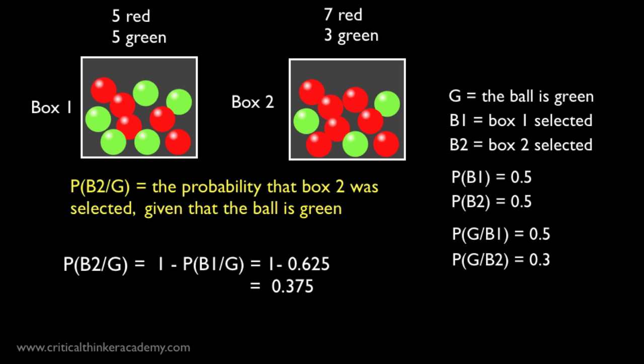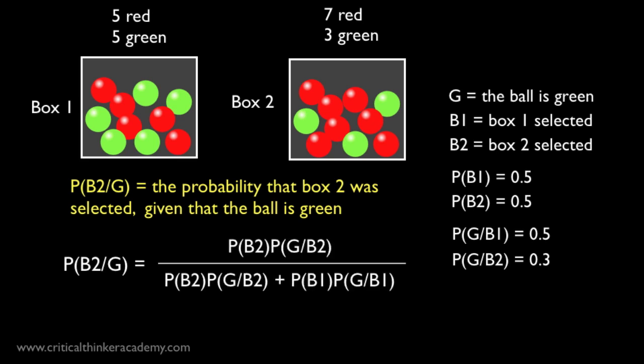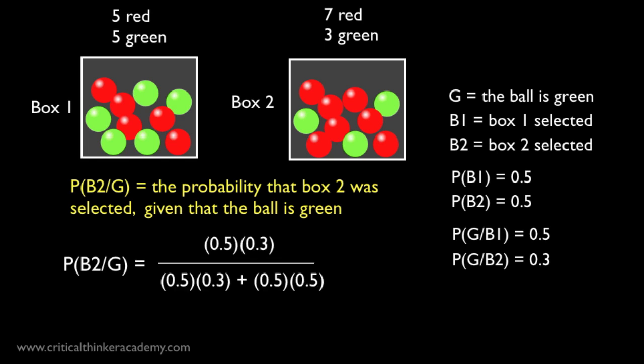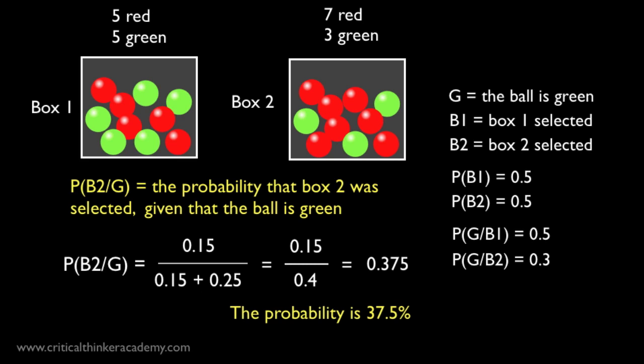The longer way to do it is to solve Bayes' Rule for box 2 instead of box 1. The setup looks like this. And when you plug in the right values, you get this. And then when you evaluate the products and do the sums, you get this. Which is the same answer. So it works either way.